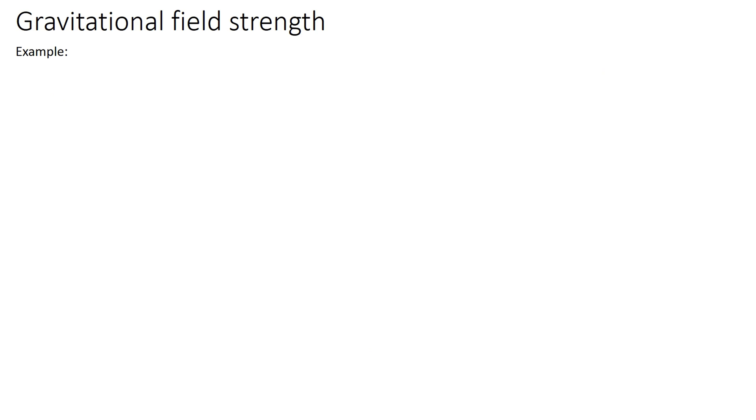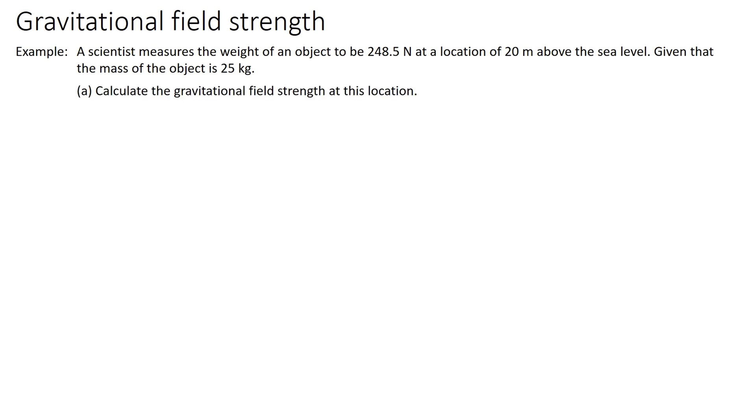Now, let's look at this example. A scientist measures the weight of an object to be 248.5 Newton at a location of 20 meters above the sea level, given that the mass of the object is 25 kilograms. (a) Calculate the gravitational field strength at this location. (b) The scientist measures the weight of the object again at another location.